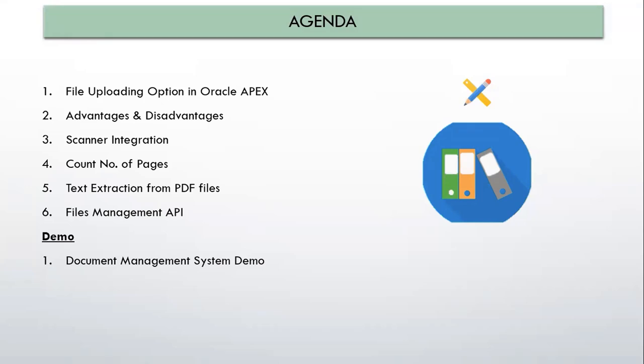In this session, we will discuss the different aspects of our document management system, in which the first option is file uploading in Oracle Apex. We will see what different types of options are available if you are working in Oracle Apex. After that, I will show you the advantages and disadvantages of using the different types of options available in Oracle Apex, or which option you need to use according to your requirement or based on the project scope.